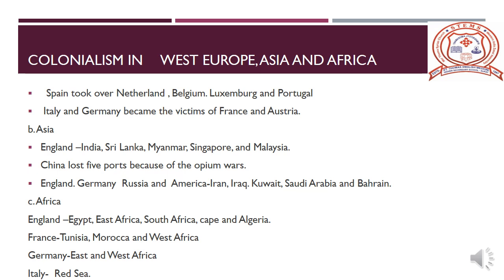In this war, China lost and signed a treaty. According to that treaty, China had to give its five ports to England for trade and expansion. By seeing the weakness of China, all other European powers like Japan, Russia, Germany, France, Belgium, and America got trade and political rights in China. These countries established their trading centers and oil companies in Iran, Iraq, Kuwait, South Arabia and Bahrain, establishing their colonies there.